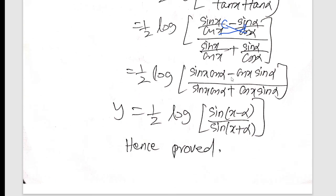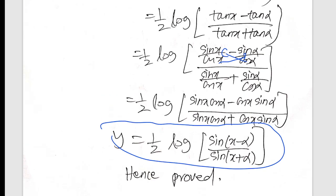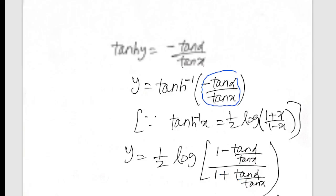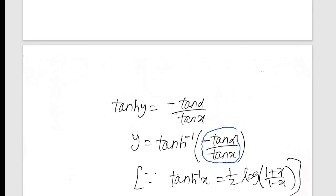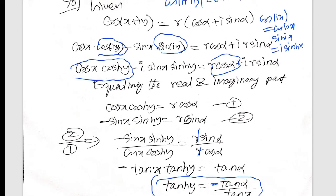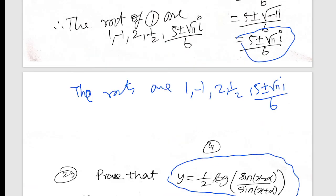We have minus — this is sin(a minus b) formula — then sin(x minus alpha), this is sin(x plus alpha), so this is the answer. So this is the answer in 2021, 5 mark and 10 mark. This is the problem, this is the video, this is the PDF in the description, this is the download. Thank you.